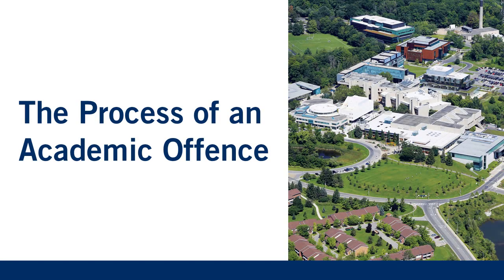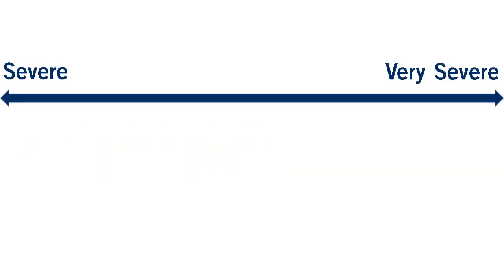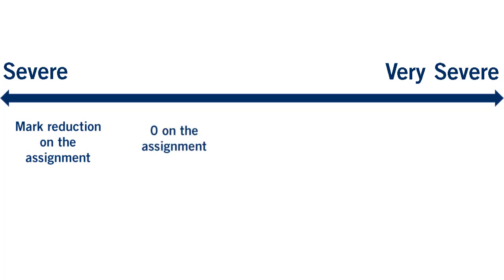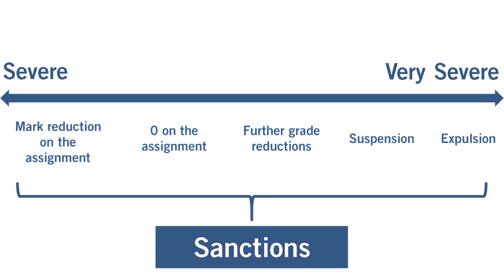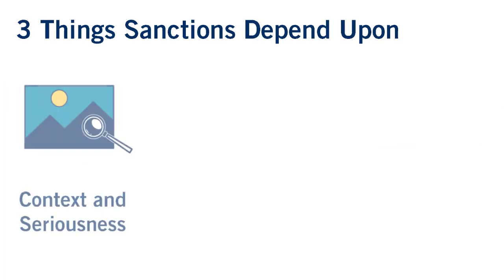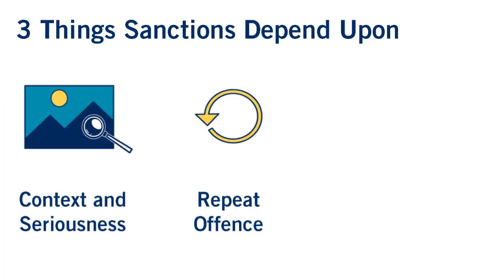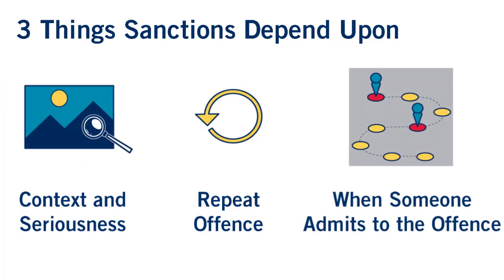An academic offense case is serious and the consequences are often severe. Depending on the specific case, the consequences can range from a grade deduction on the assignment, to zero on the assignment, to further grade reductions, to suspension, to expulsion. The consequences someone would face are called sanctions. The sanctions in a case will depend on the context and seriousness of the offense, if this is a repeat offense, and when in the process someone admits to the offense.